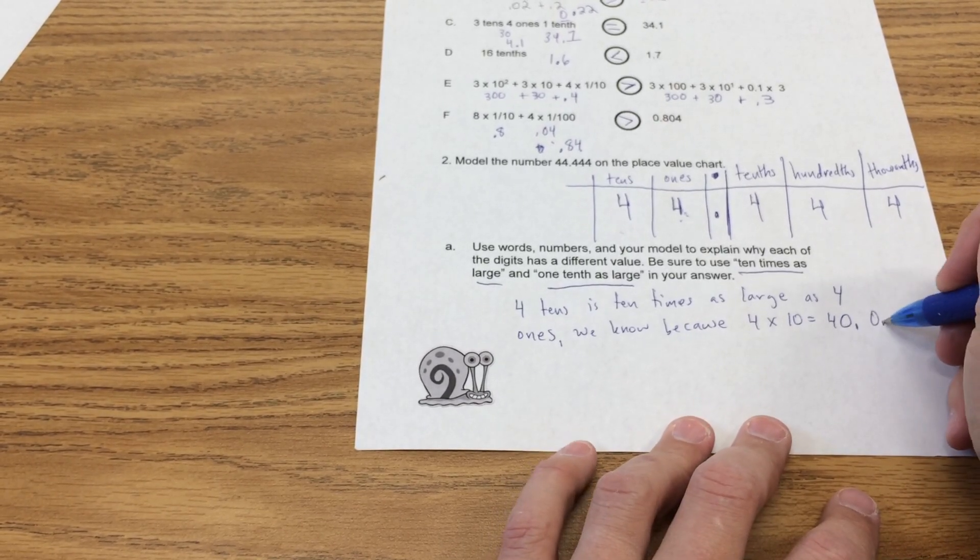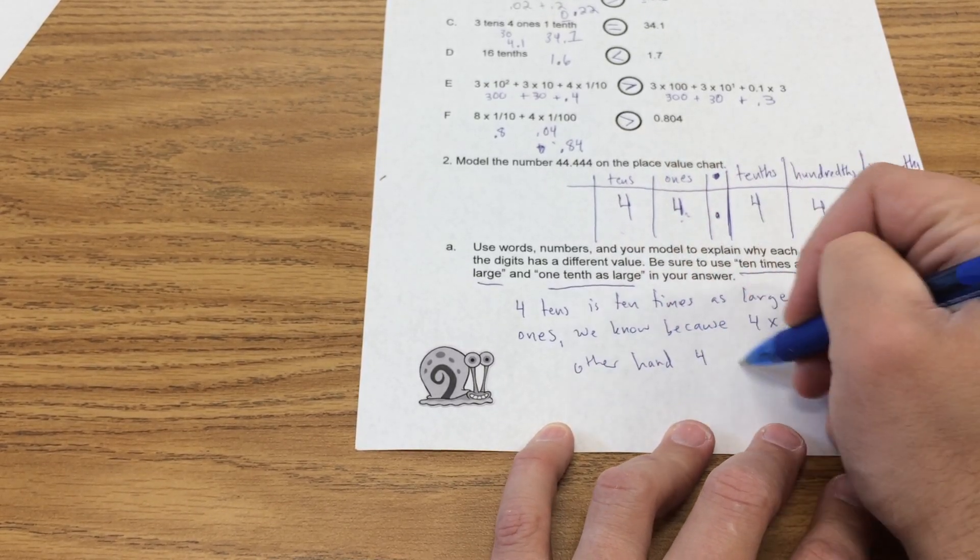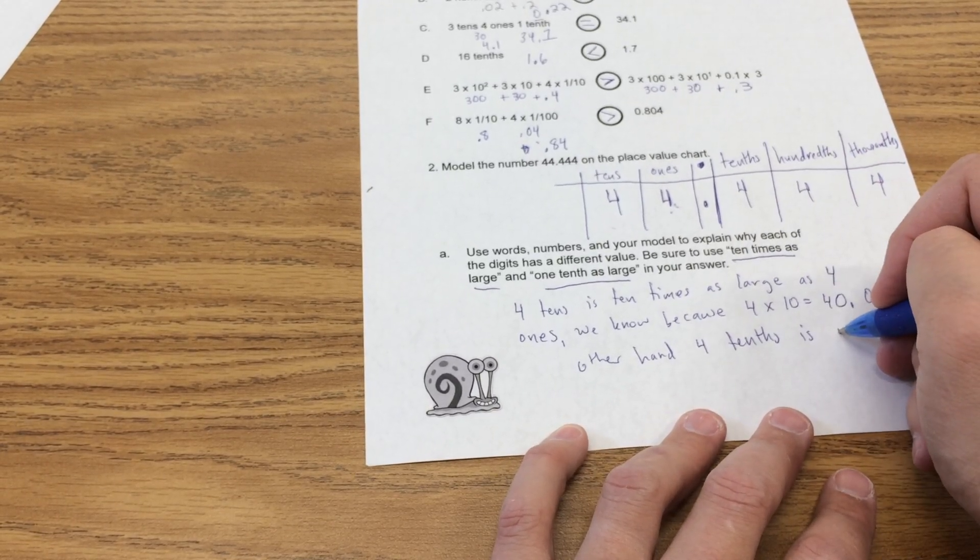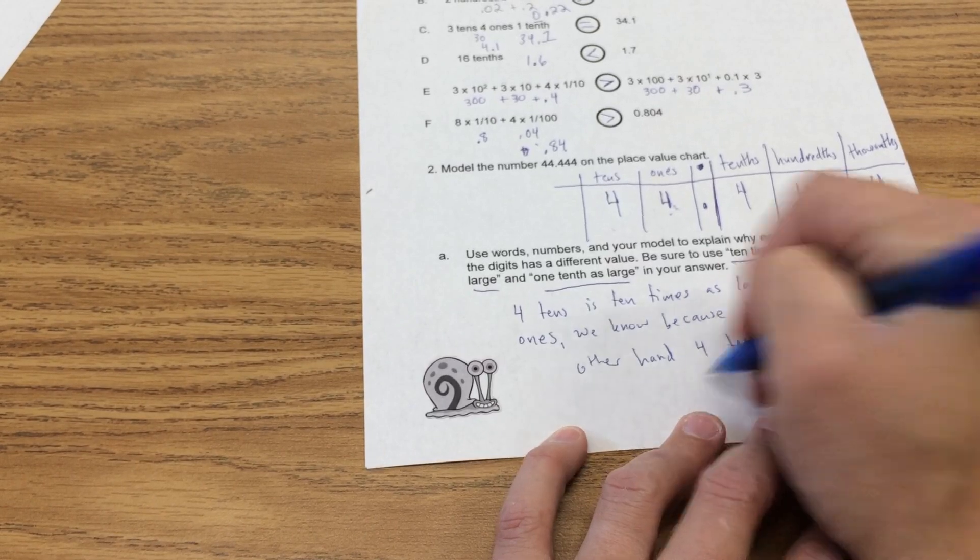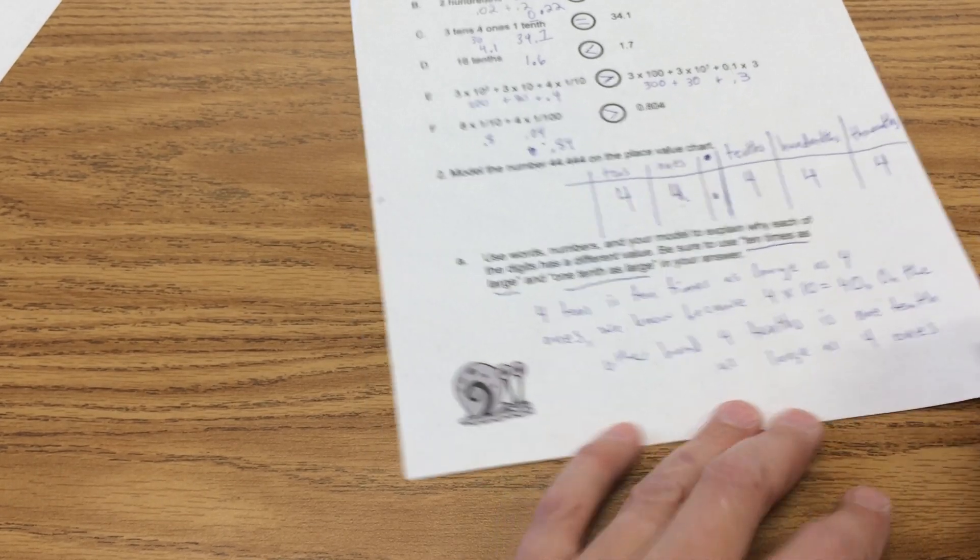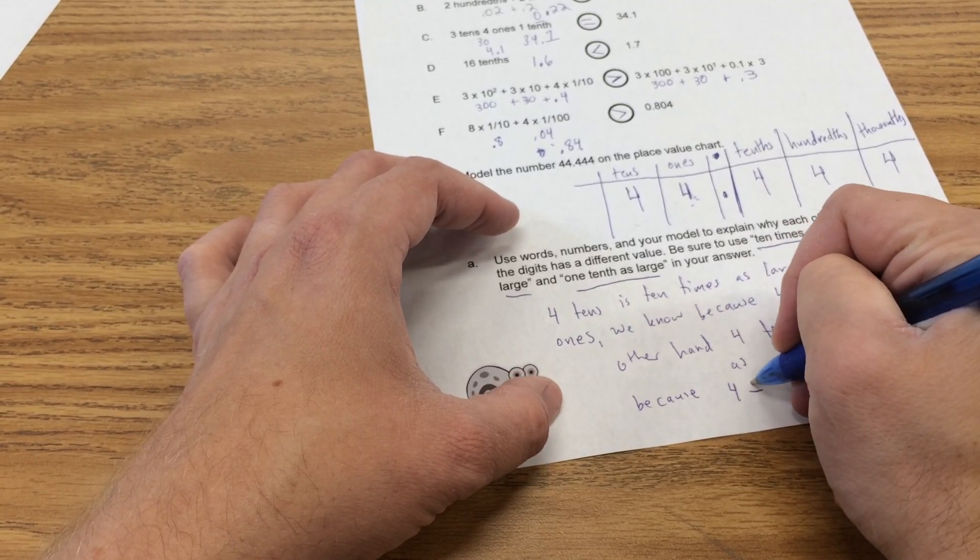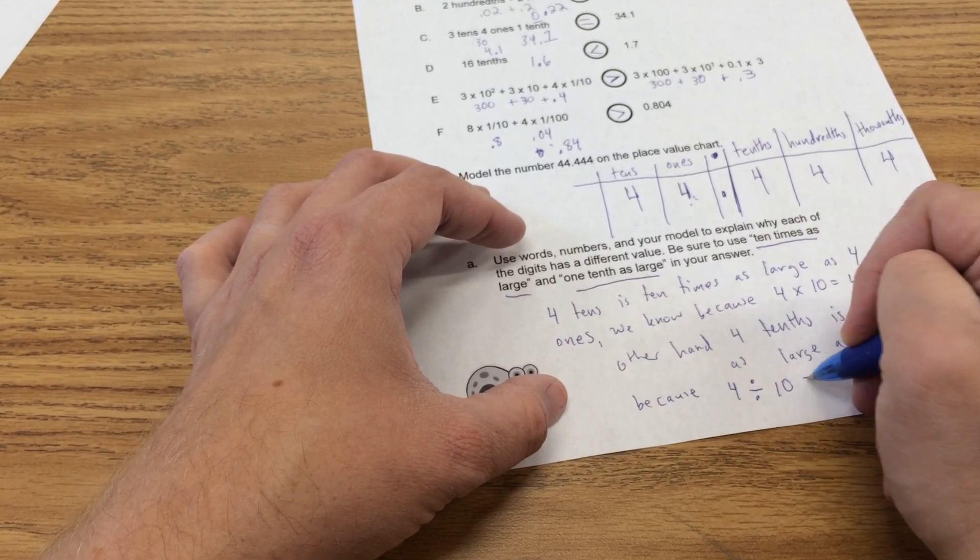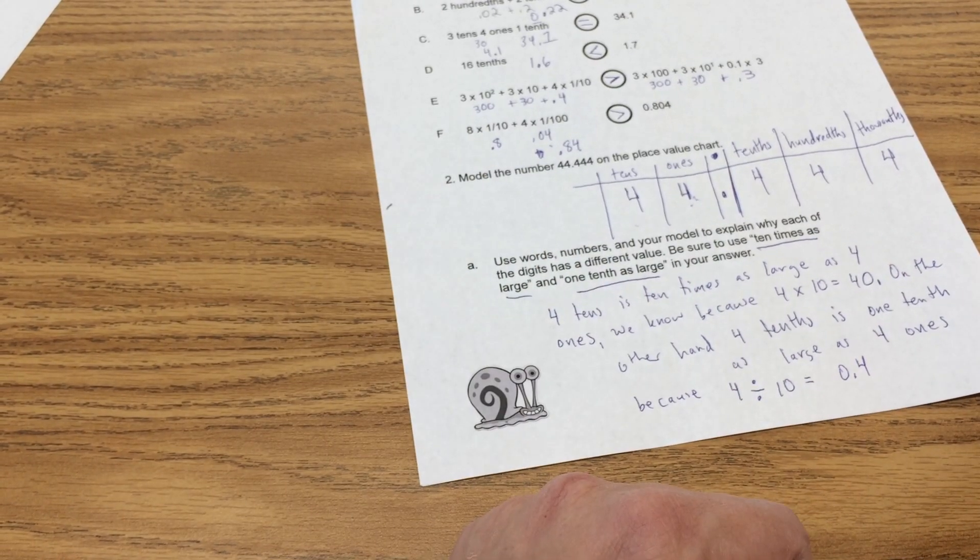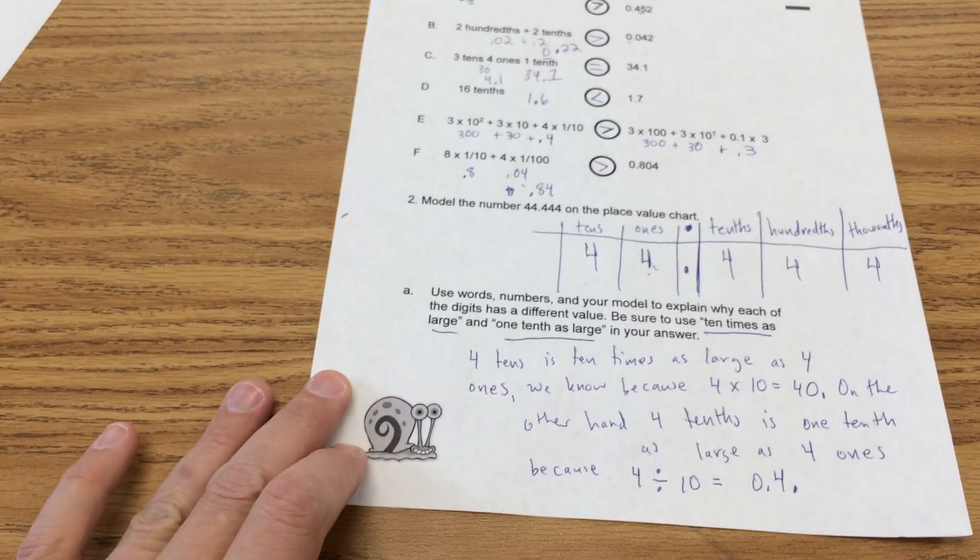On the other hand, 4 tenths is 1 tenth as large as 4 ones. Because 4 divided by 10 equals 4 tenths. So let's put that up. Thank you.